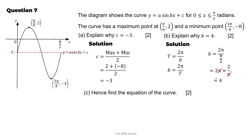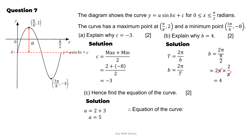Part c: find the equation of the curve. We already know b equals 4 and c equals negative 3. The amplitude a equals the distance from the neutral line to the maximum: from the neutral line (negative 3) to the maximum (2) is 2 units, plus 3 units to the x-axis, giving a total amplitude of 5. The equation of the curve is y equals 5·sin(4x) minus 3.